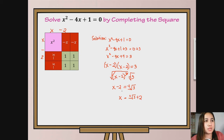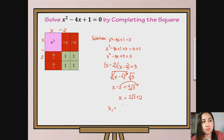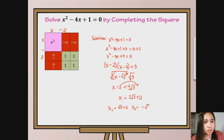So we have two roots or two solutions, because we have positive and negative. That means x sub 1 equals positive square root of 3 plus 2, and our second root x sub 2 is negative square root of 3 plus 2.